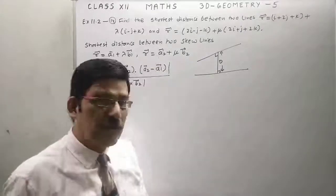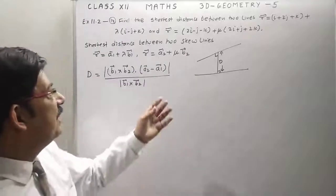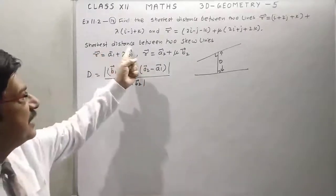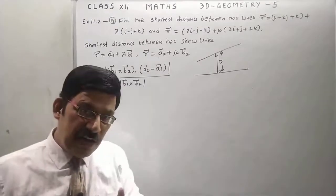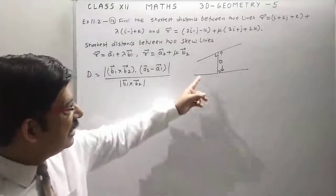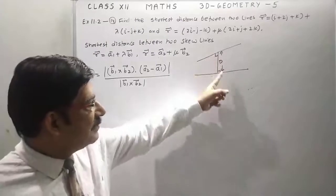Students, now the last topic of line that is very important: shortest distance between two skew lines. Skew lines means lines that are not parallel and non-intersecting. You can see like this, we have to find distance between them.